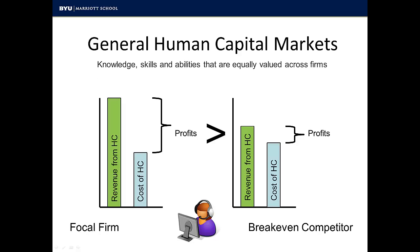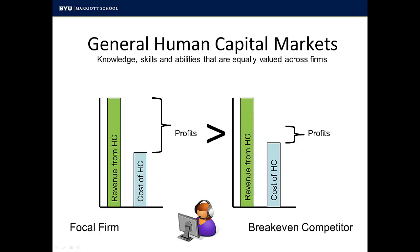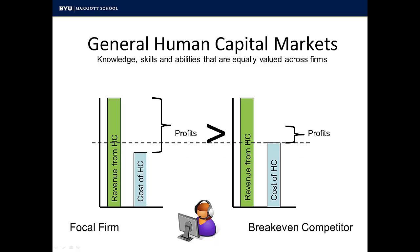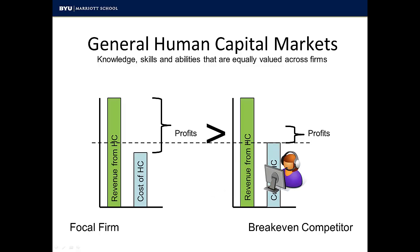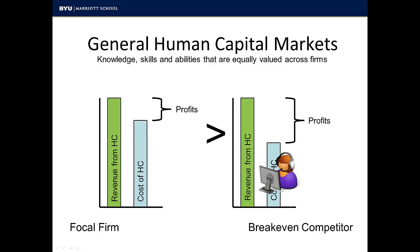By definition, general human capital is equally valued across firms, so the revenues from human capital must be equivalent across firms. The worker will obviously join the firm that offers the highest utility from incentives. Firms will increase incentives until the costs of incentives are equal to the revenues from human capital.